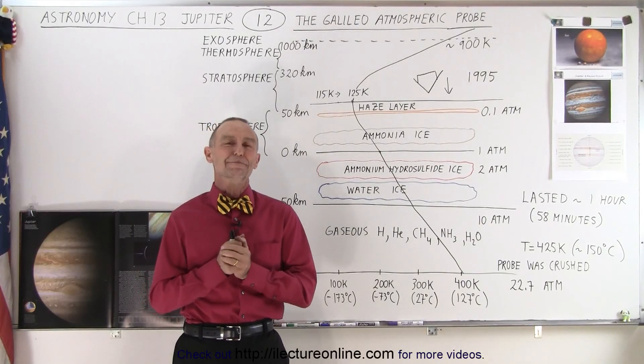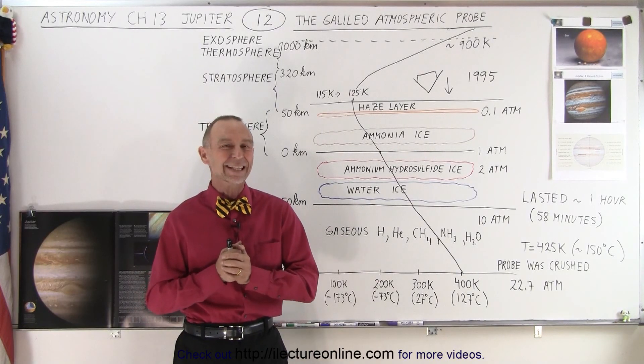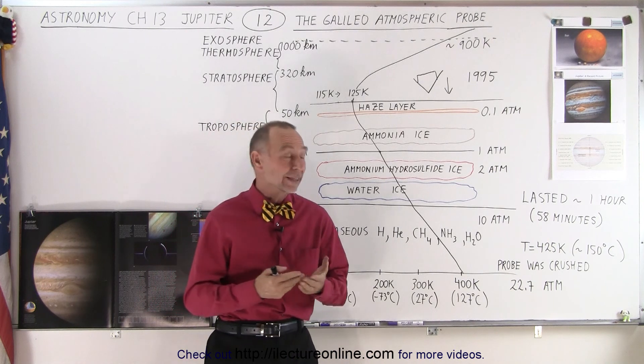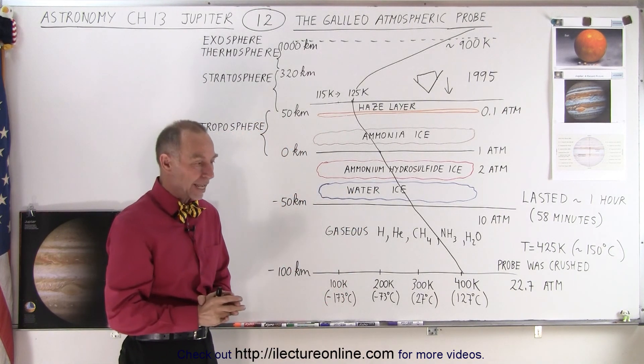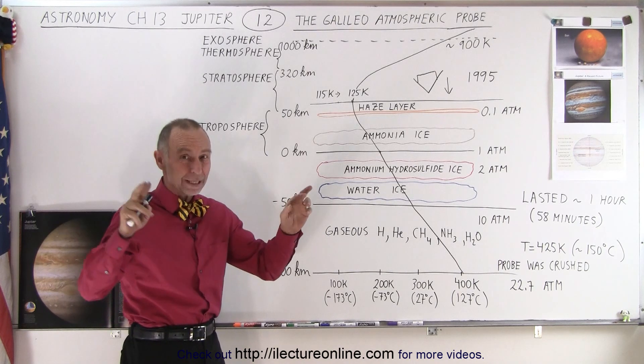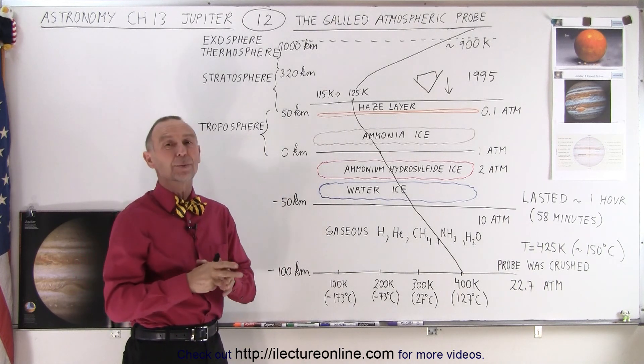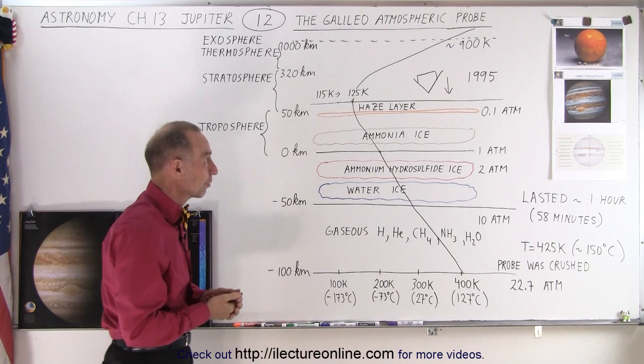Welcome to Electureonline. Now let's talk about the Galileo probe that they allowed to drop into the atmosphere of Jupiter and eventually go into the planet to the point where the probe could no longer survive.